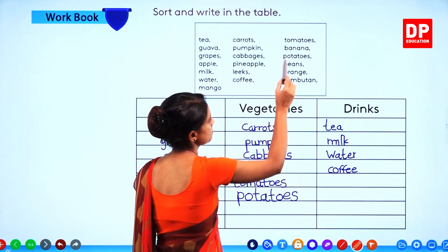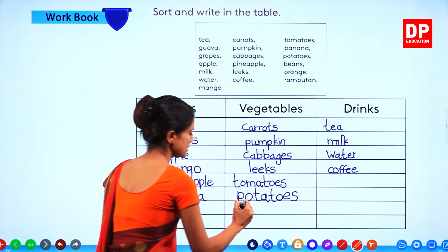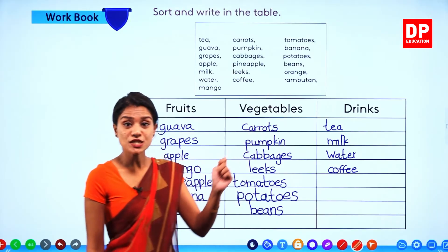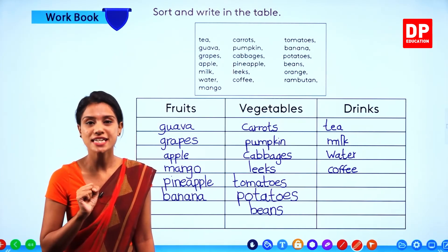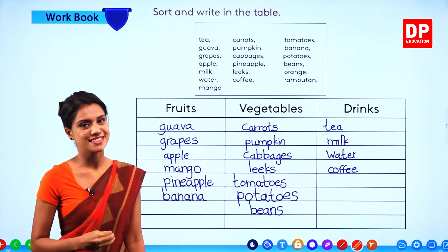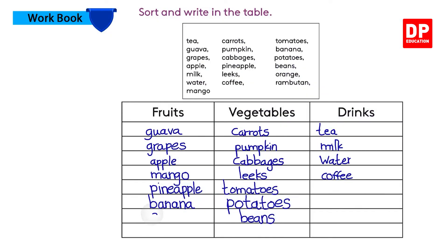Next: beans — bonchi. It's a vegetable. B-E-E-N-S. Beans. Next: orange. Orange is a fruit — thodampalam. It is orange in color. It has a lot of vitamins. O-R-A-N-G-E. Orange.